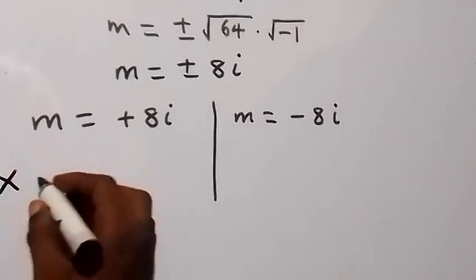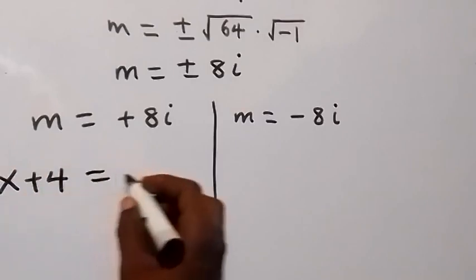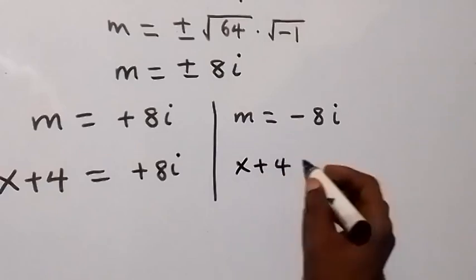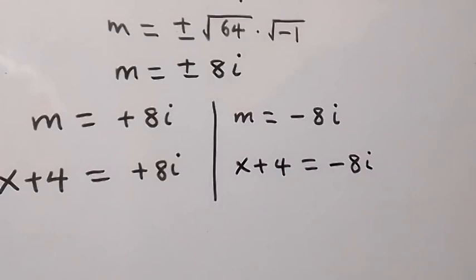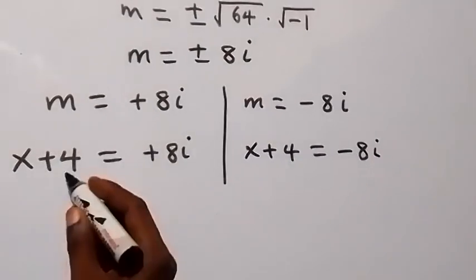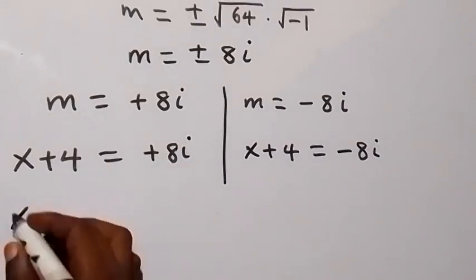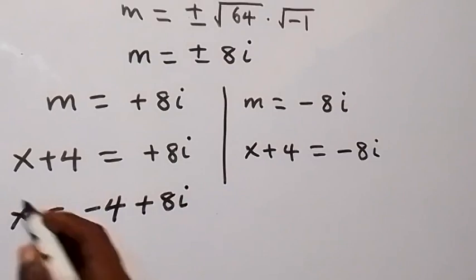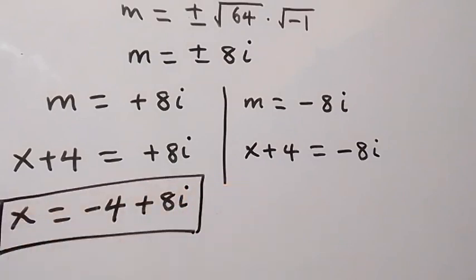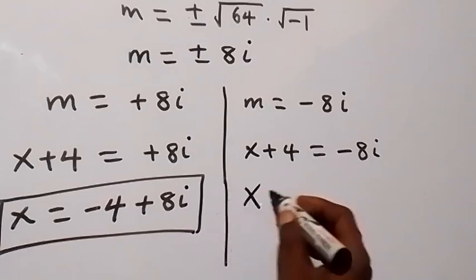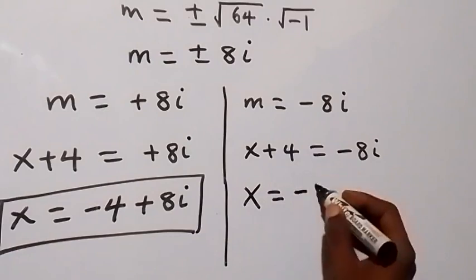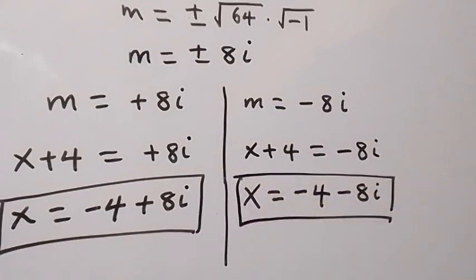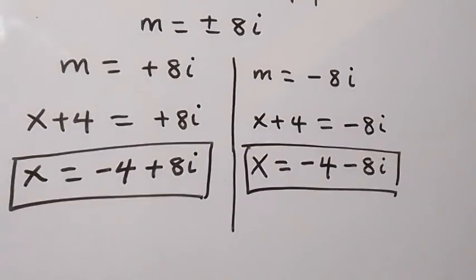Substituting back: x + 4 = 8i gives x = -4 + 8i, and x + 4 = -8i gives x = -4 - 8i. Both are complex solutions.